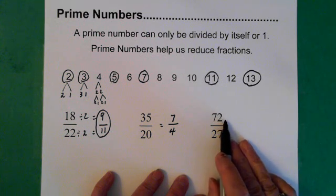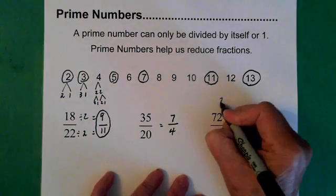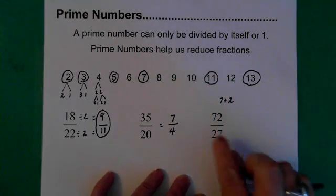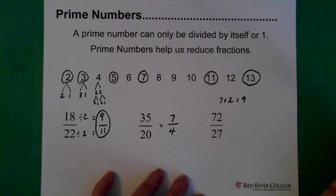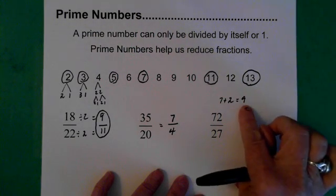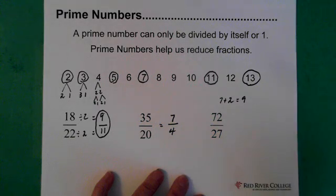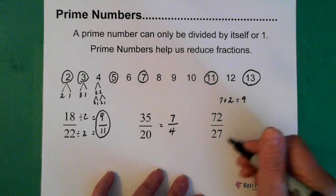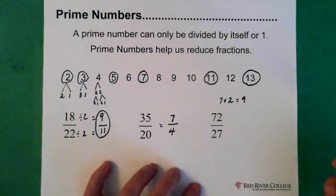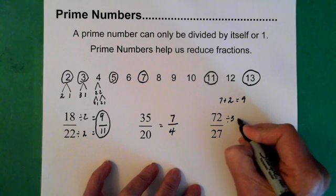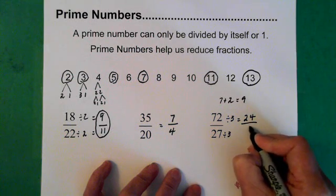This one is divisible by two — how are we going to deal with this? With any number, if you add the digits and get a number divisible by three, then that number is divisible by three. So seventy-two: seven plus two is nine, which is divisible by three. So seventy-two is divisible by three — not by two, not by five, not by seven, but by three. We divide seventy-two by three and get twenty-four, and divide twenty-seven by three and get nine.